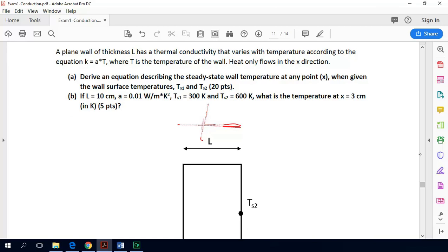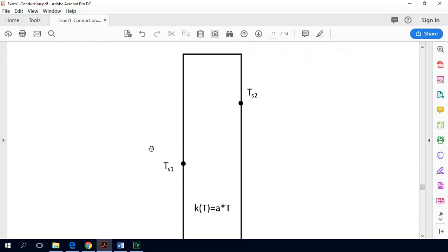So we are first asked to derive an equation describing the steady state wall temperature at any point x when given the wall surface temperatures, TS1 and TS2. And so here is how our wall looks. So we are going to want to derive an expression that tells us what this equation looks like. So right now if we are being very naive we don't know exactly what T as a function of x looks like. But if we solve the heat equation we will be given an explicit equation that tells us exactly how temperature varies with x.